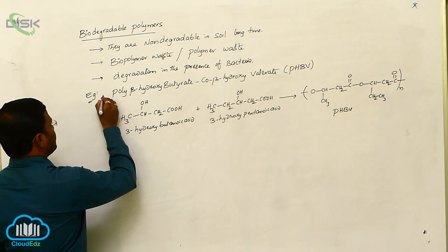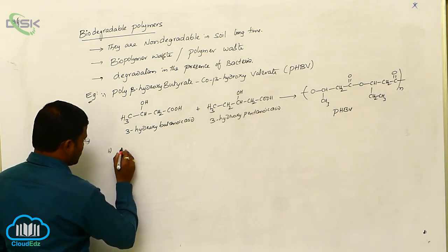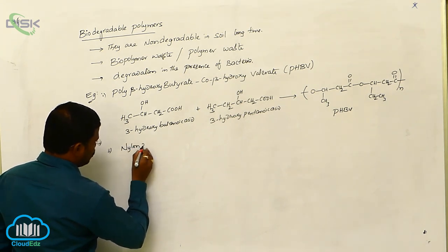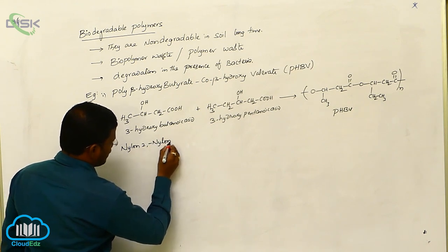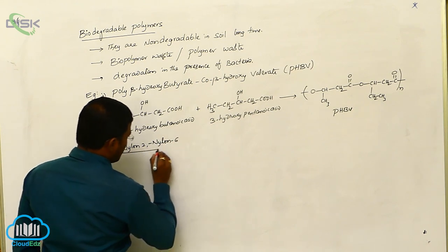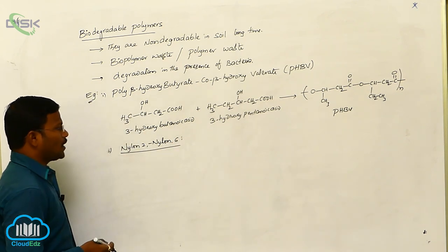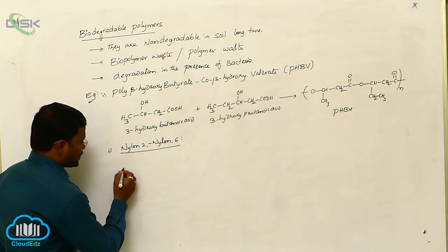One more example of a biodegradable polymer developed by scientists is Nylon 2, Nylon 6.